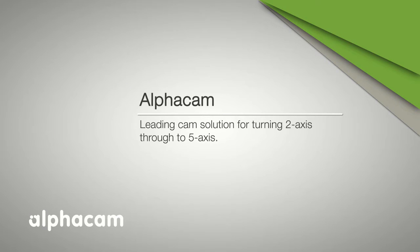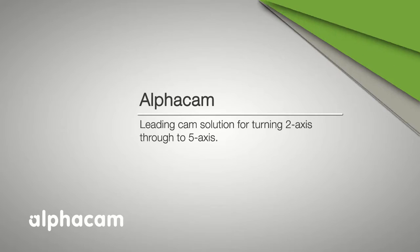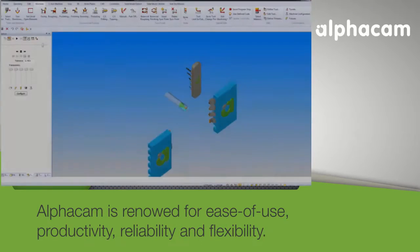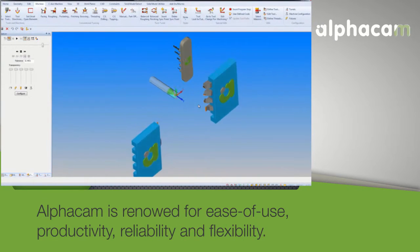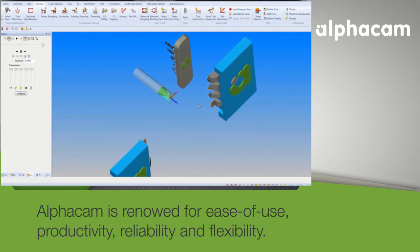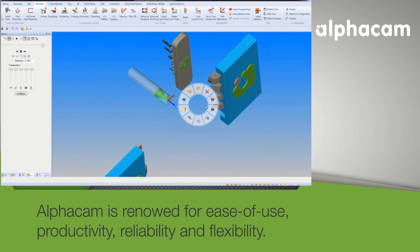AlphaCam is a leading CAM solution for turning, from 2-axis through to 5-axis programming. Renowned in the CNC manufacturing industry for ease of use, AlphaCam can program any CNC lathe.